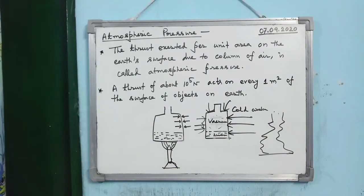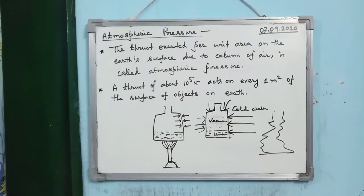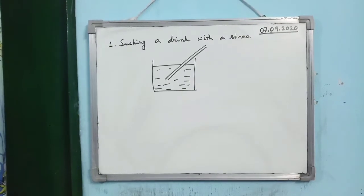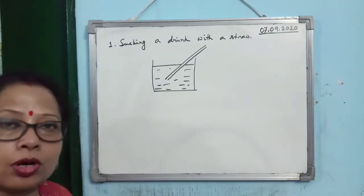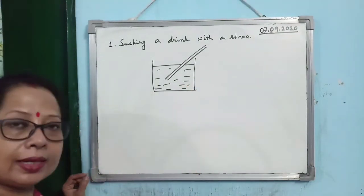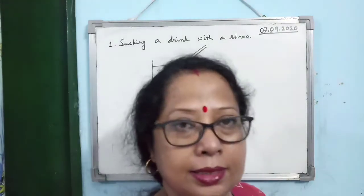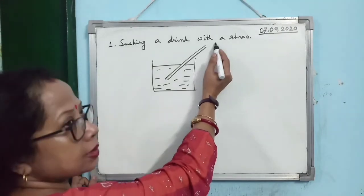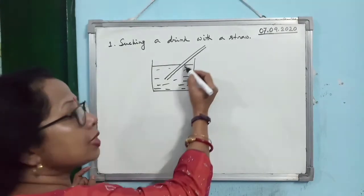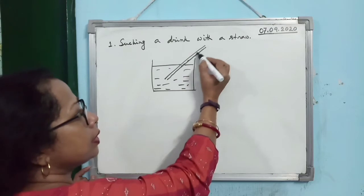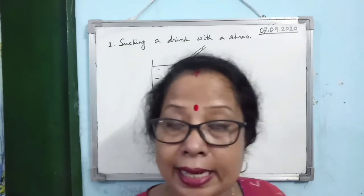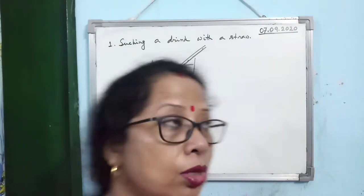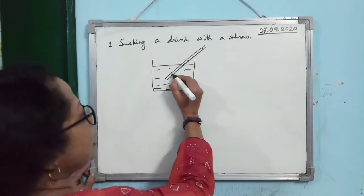There are other examples of atmospheric pressure in daily life. The first is sucking a drink with a straw. You dip the straw in the liquid, put it in your mouth, and suck. The air in the straw enters your mouth, creating a partial vacuum and low pressure inside the straw.